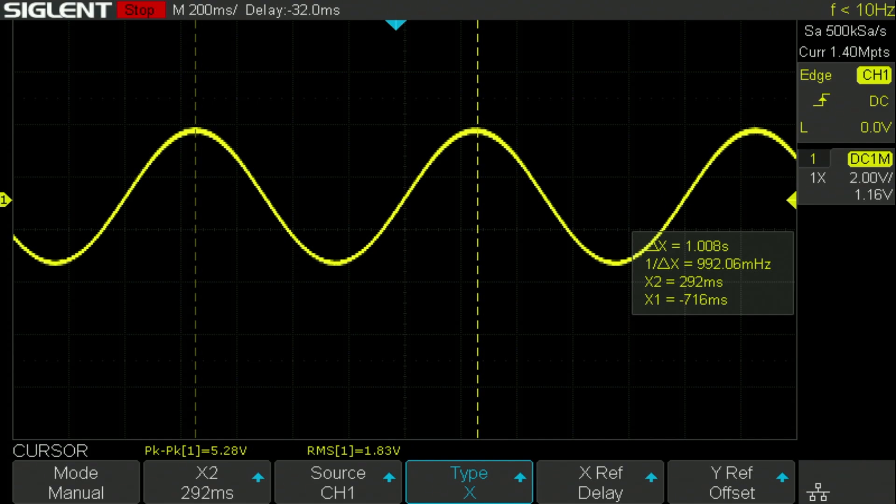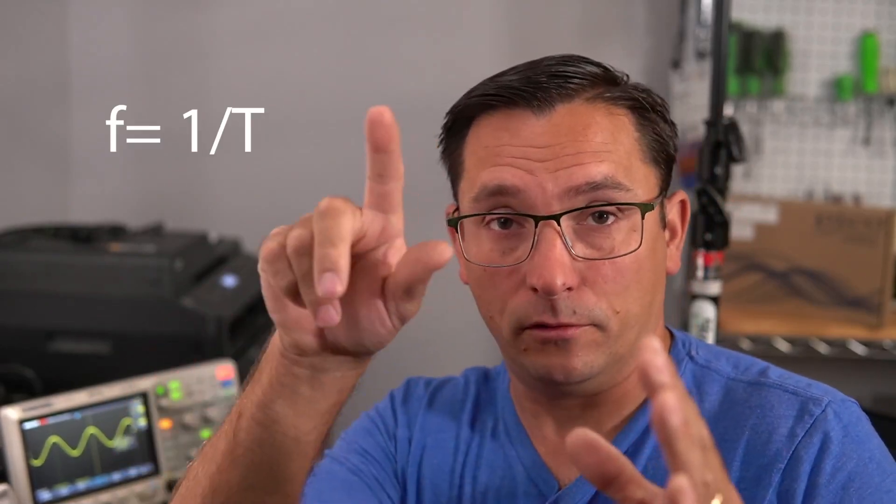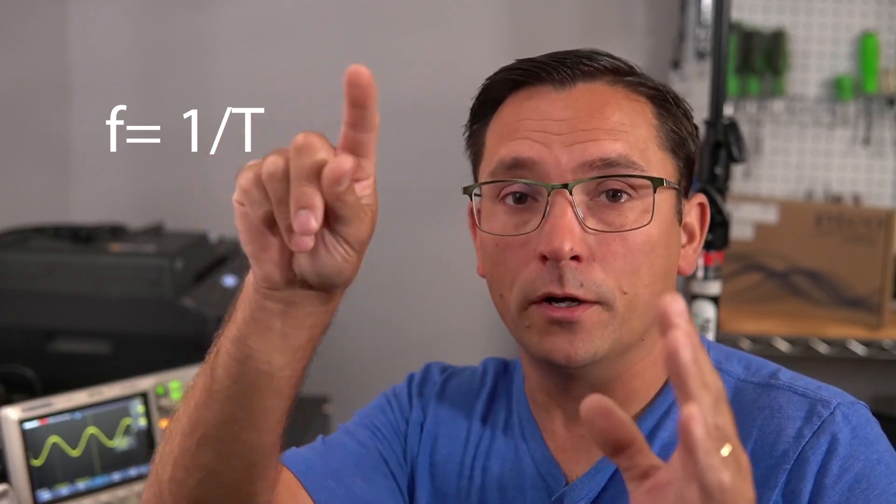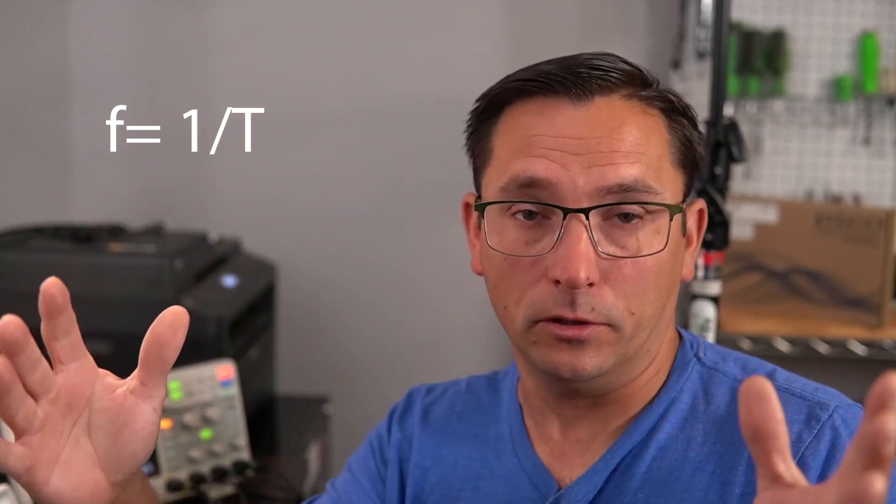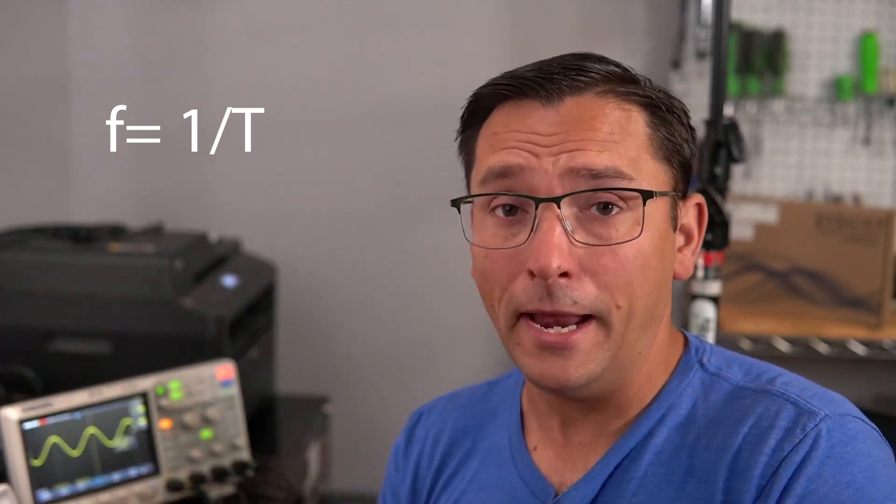Here, we're at what, 1.008 seconds? Guys, that is one complete cycle and the formula for frequency is f equals one divided by the time that it takes for one complete cycle to happen or a period to happen.